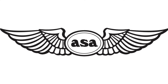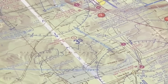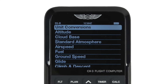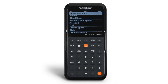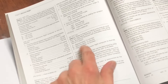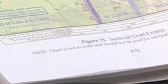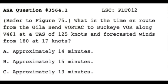Hi everybody, this is James with ASA. Today we're going to tackle a navigation question found in the ASA Private Pilot Test Prep book and show you how to find the answer using the CX-3 flight computer. The question is ASA number 3564-1, referring to figure 75: What is the time en route from the Gila Bend Vortac to Buckeye VOR along Victor 461 at a true airspeed of 125 knots and forecasted winds from 180 at 17 knots?